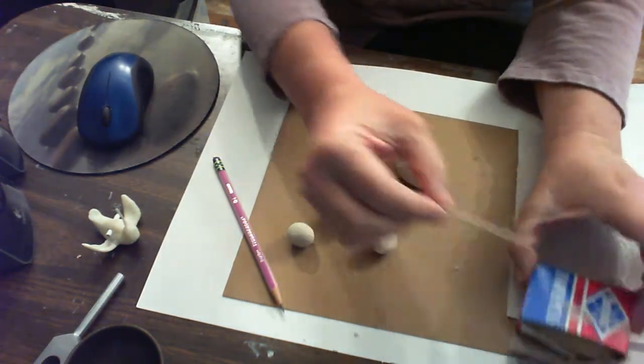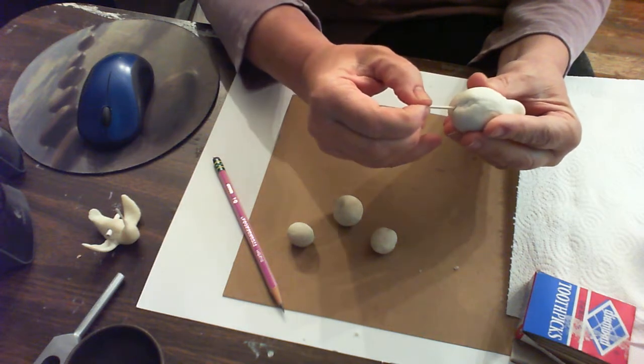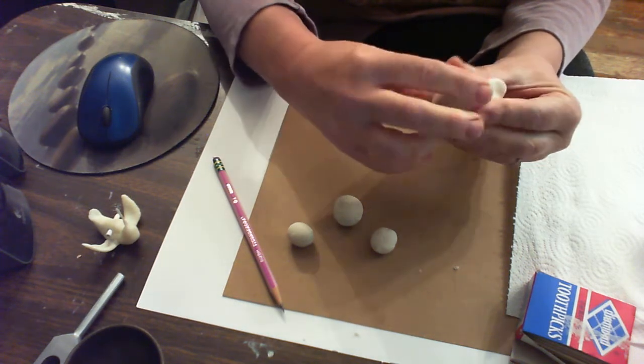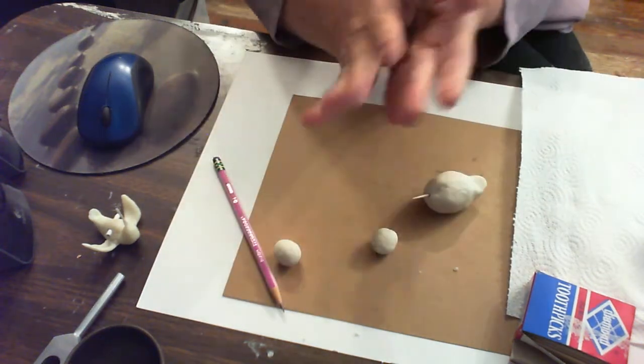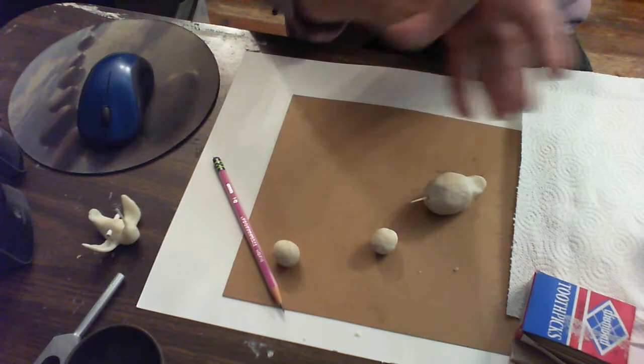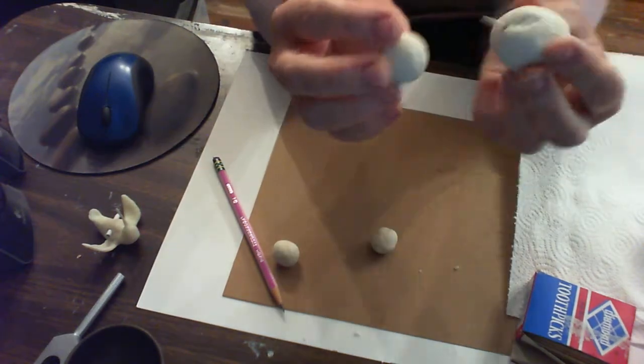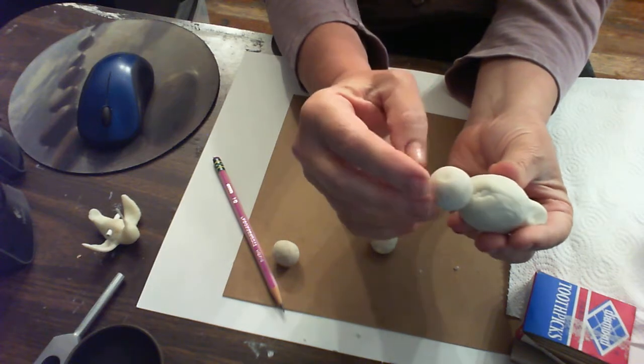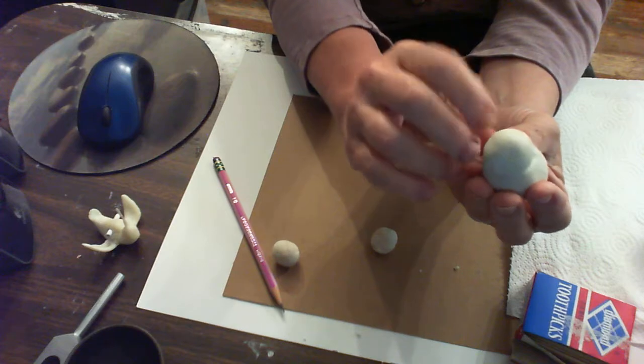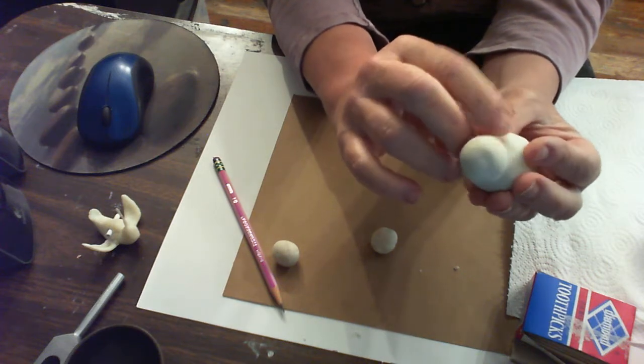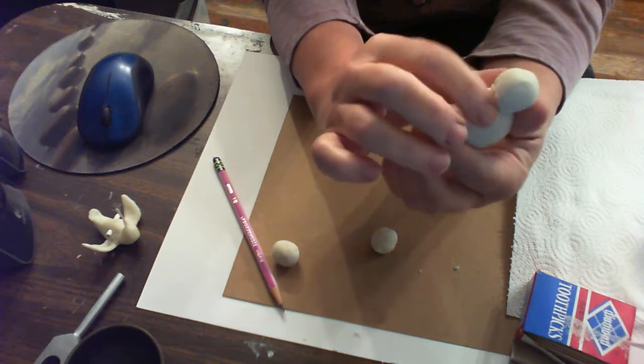Then the next step, I'm going to put a toothpick in to make sure that the head stays on. It doesn't take much. I'm going to take this ball, smooth it out, and put it on right where I think the head should be. I'm going to kind of blend it in with my fingernail there. It sticks pretty good.